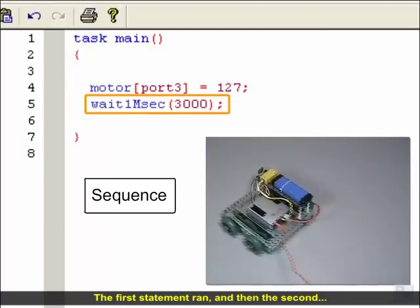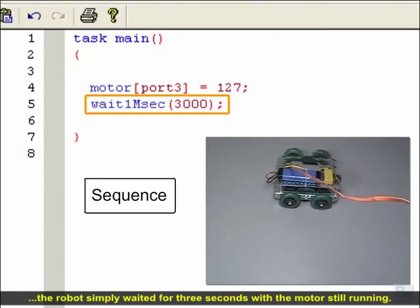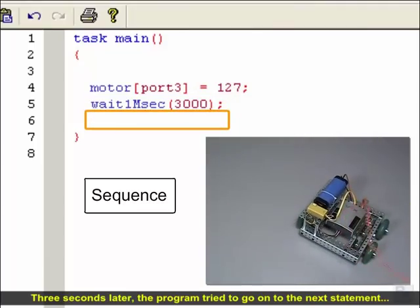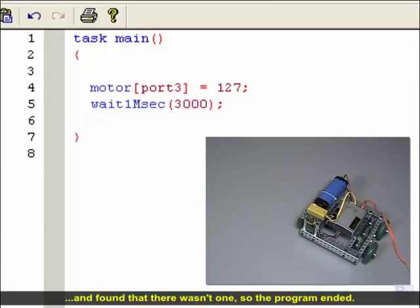The first statement ran, then the second, and when the second one ran, the robot simply waited for 3 seconds with the motor still running. 3 seconds later, the program tried to go on to the next statement, and found that there wasn't one. So the program ended.